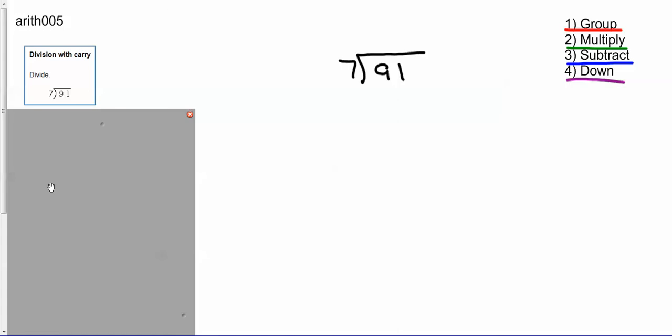Here we go with Arith005, a little division with carry. First thing I need to do is group. Now, just to make sure, I'm going to count by sevens over here.